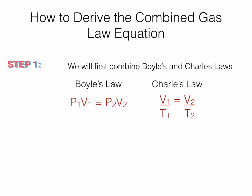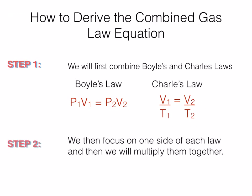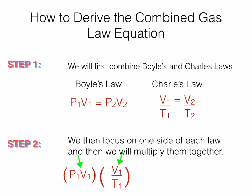Now that doesn't mean that we're going to abandon the right side — for the purpose of demonstration, I'm just going to look at the left side, but you're going to be doing the same exact thing to the right side. We're going to take the P1V1 and bring it down, and then take the V1/T1 of Charles' Law on the left-hand side and bring it down and multiply these two together.